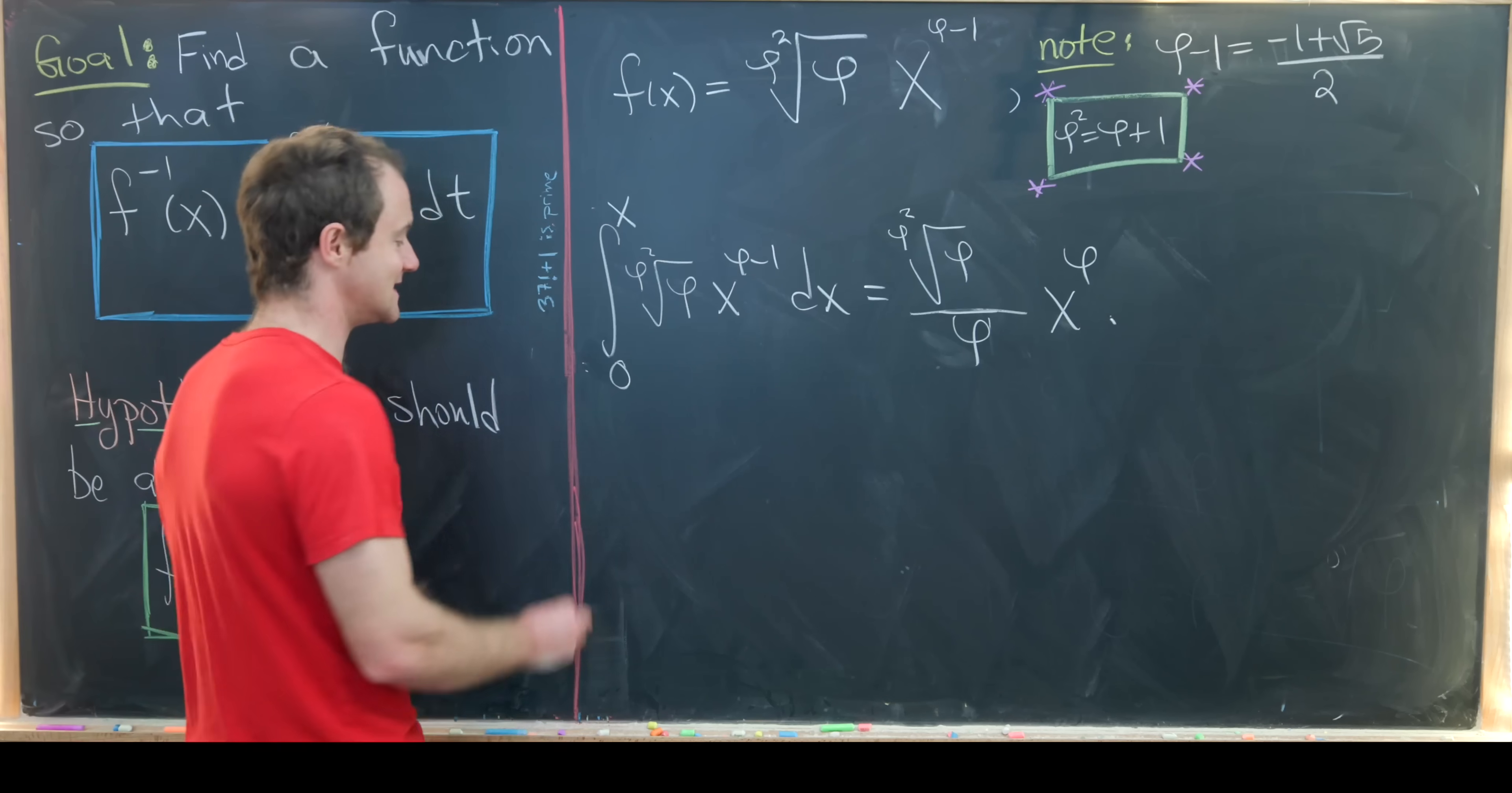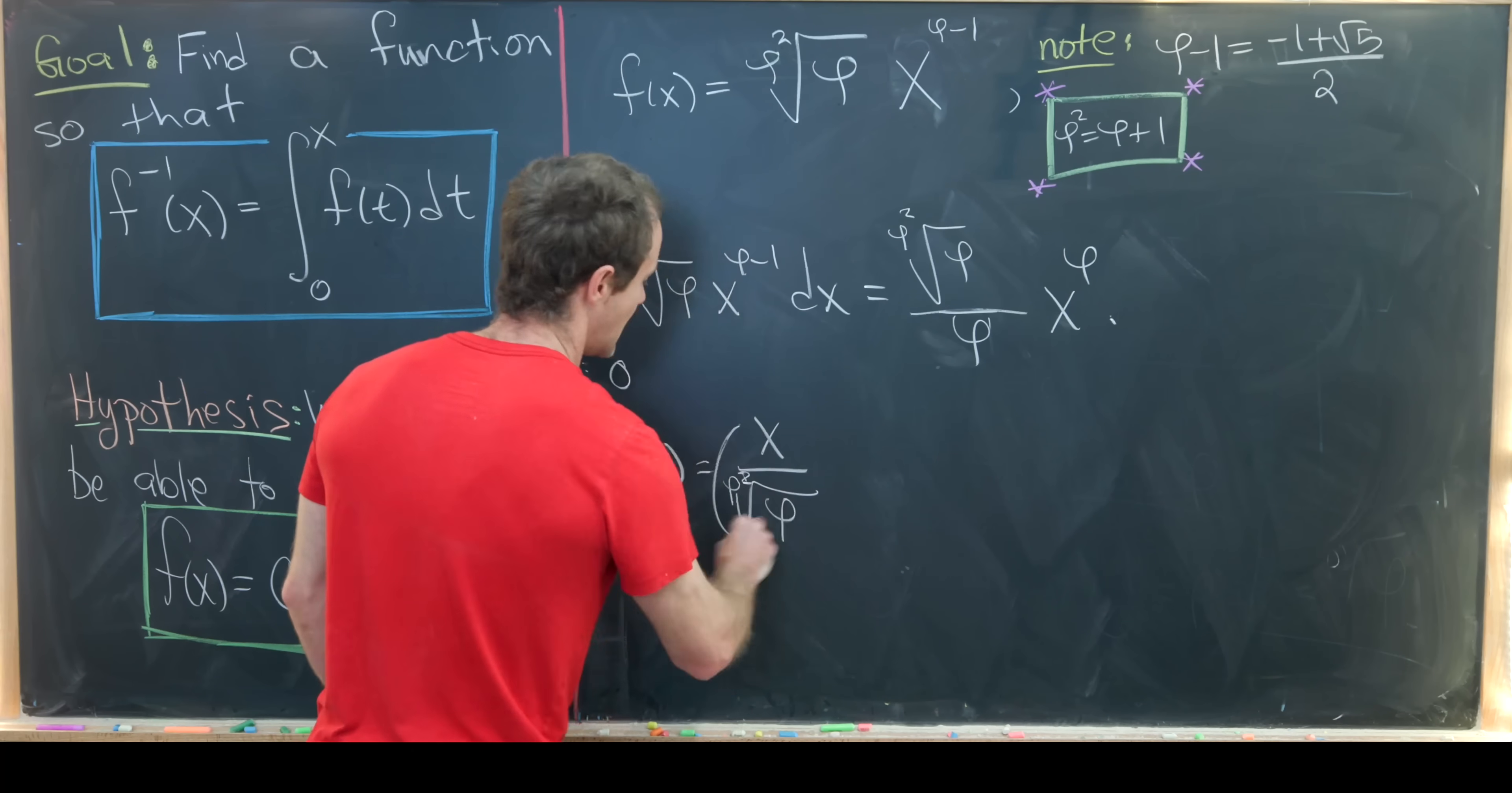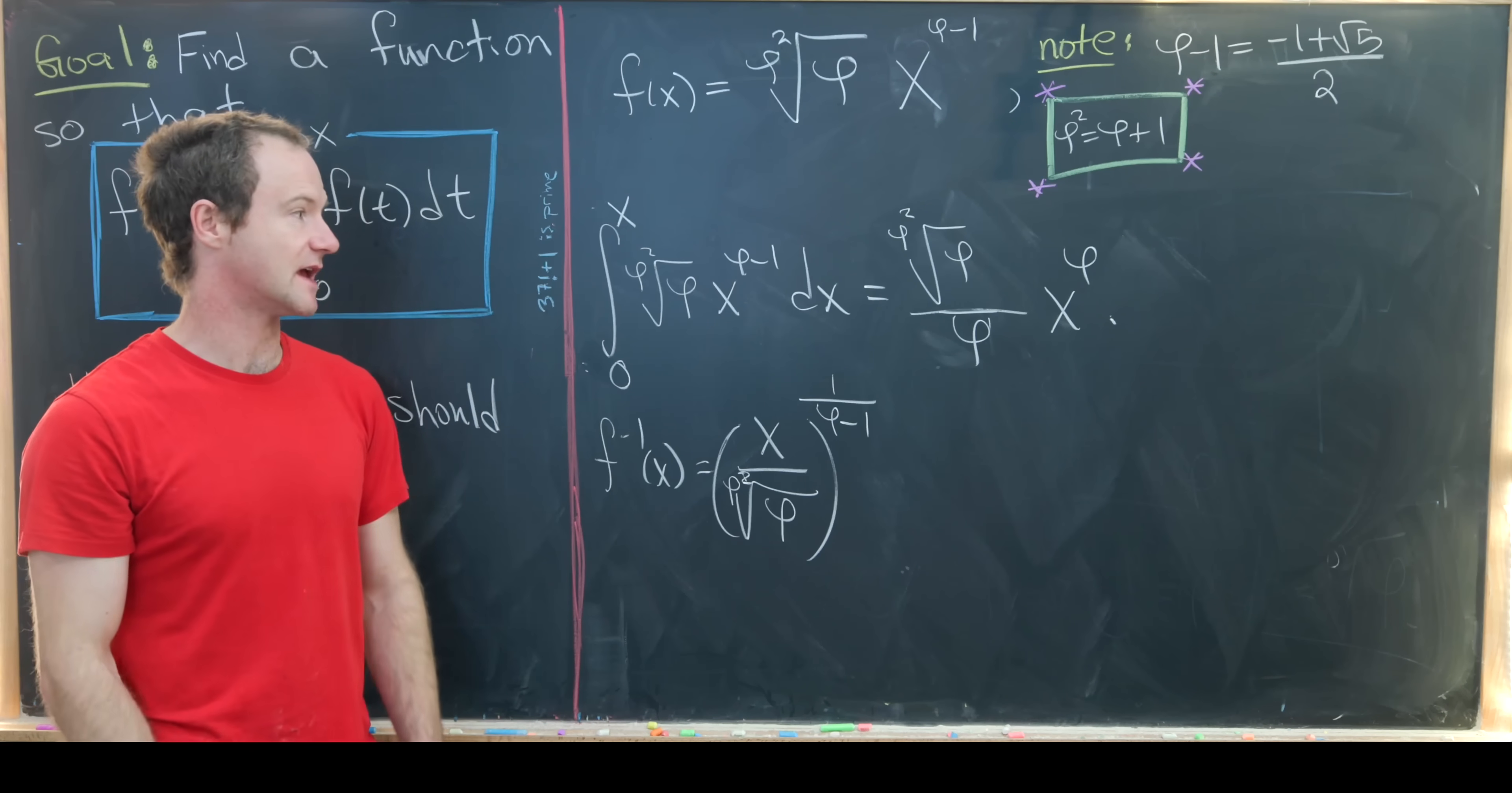Now let's compare that to the inverse function. The inverse function will be x over this constant—let's write that constant down, it's a bit of a mouthful—and then to the inverse of this power. That'll be 1 over (phi - 1) like this. Now let's see if we can simplify these things until they look the same.